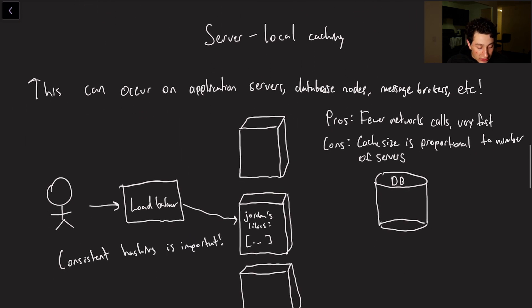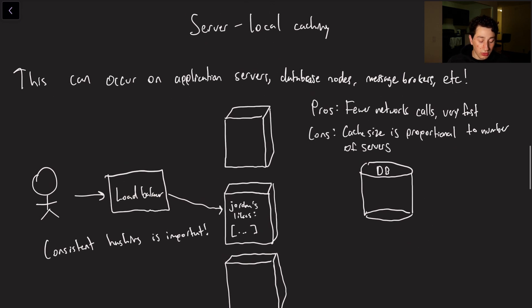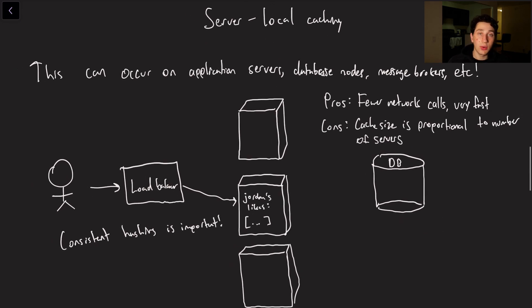Okay so now I'm going to dub a term called server local caching because now that we've answered the question what do we cache we should probably start talking about where do we store it. So one type of storing this data I would call server local, just made it up so you know don't quote me on that, don't use it in a systems design interview, but the point is the data that you're caching can actually be stored on the application servers themselves.